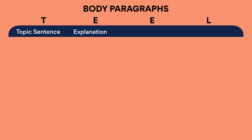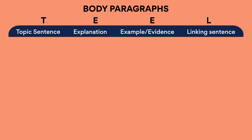Moving into the body paragraphs. Let's make sure we're on the same page with TEAL. T — topic sentence. E — explanation. E — example and evidence. L — linking sentence. Sometimes the E's are interchangeable; some people say 'example' instead of 'explanation.' Don't get bogged down with that. Different teachers will teach TEAL differently, but let's go with the one I mentioned and you can modify it according to whatever TEAL works best for you.